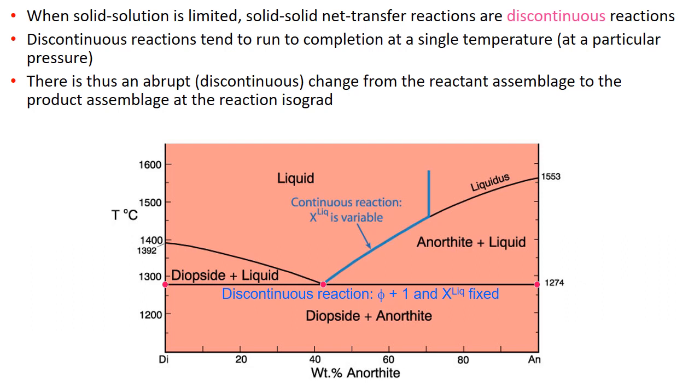When solid solution is limited, solid-solid net transfer reactions are considered discontinuous and tend to be univariant and run to completion as discussed in the previous video. As a result, there will be an abrupt change from the reactant assemblage to the product assemblage at the reaction isograd.